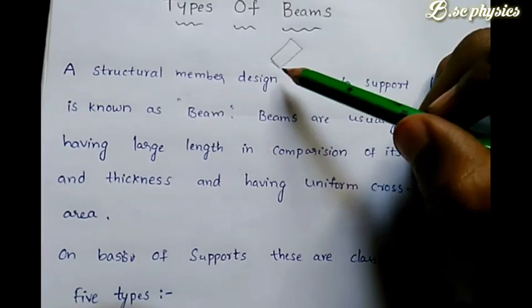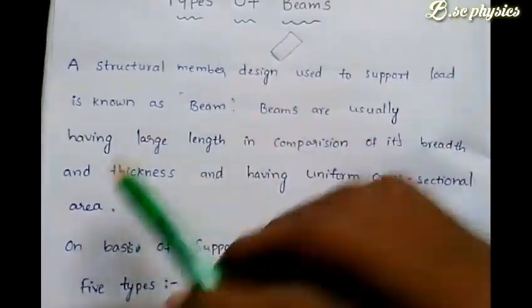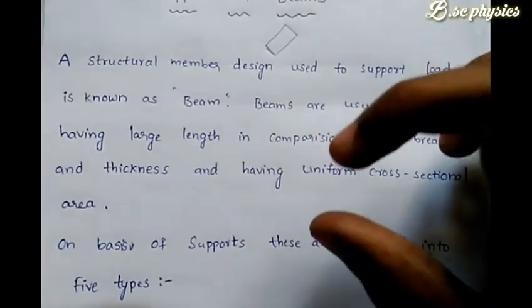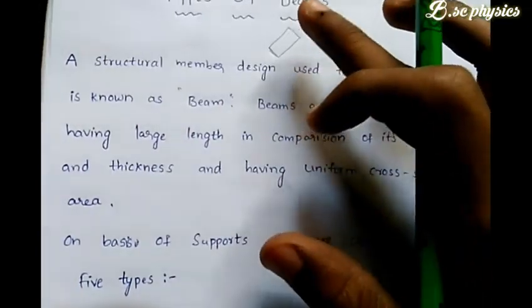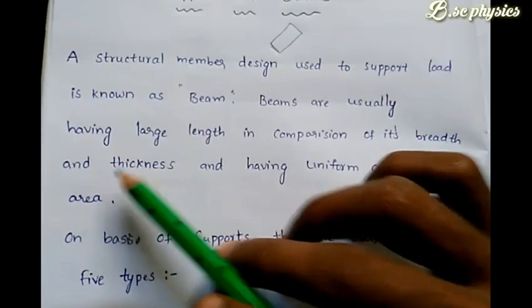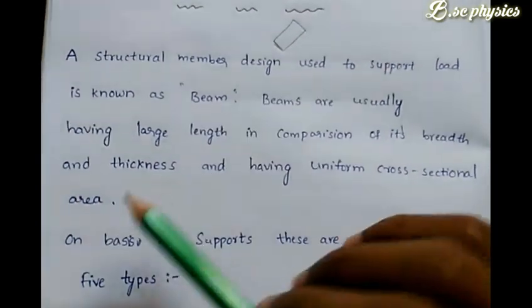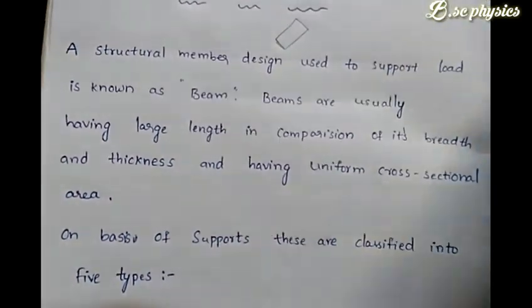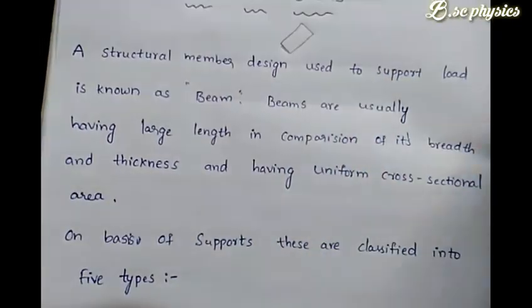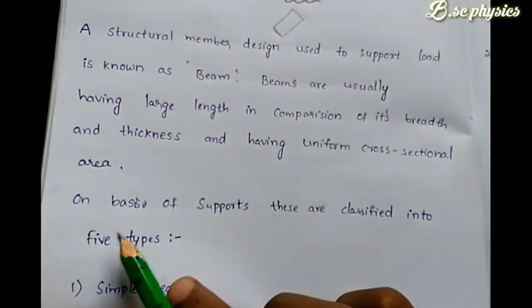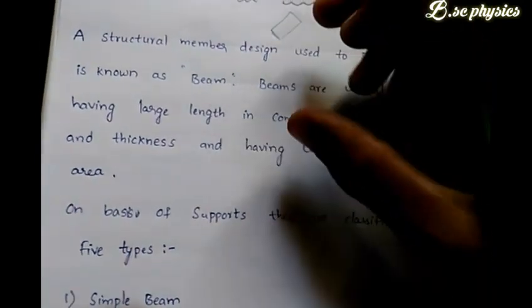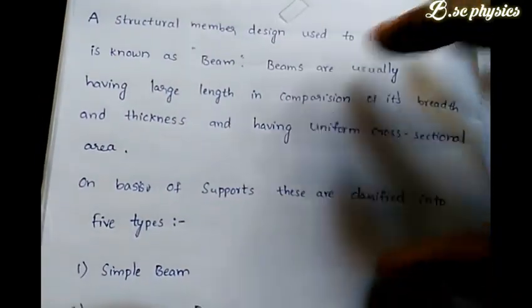If you compare the length, the length will be higher. The thickness of the beam is lower. This is a uniform line which we have with side poles. We have five types of beams.